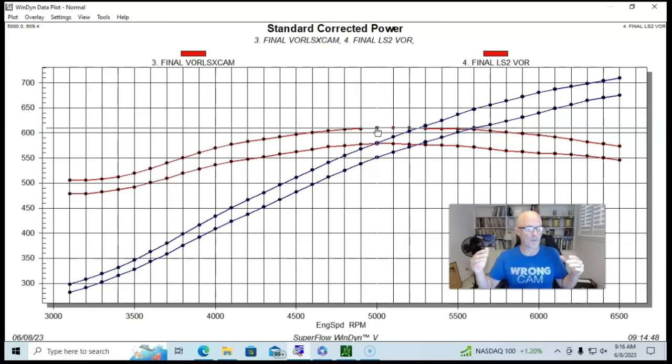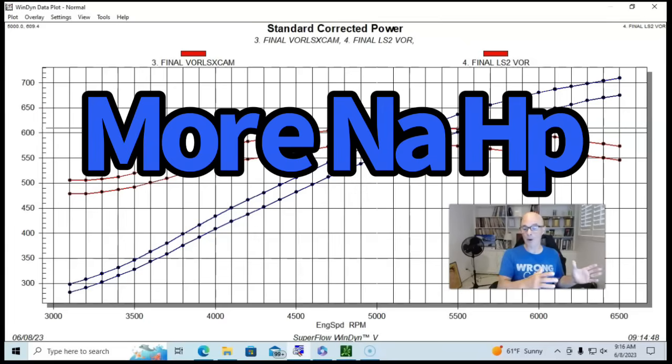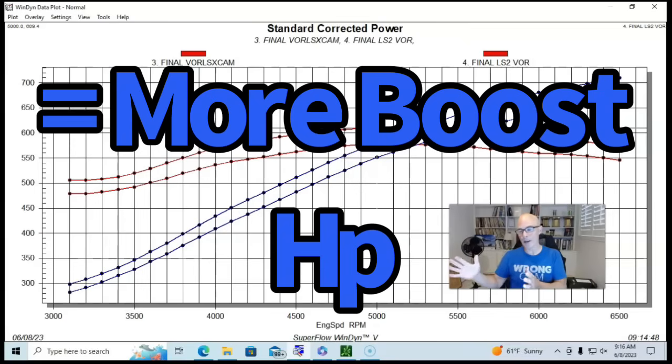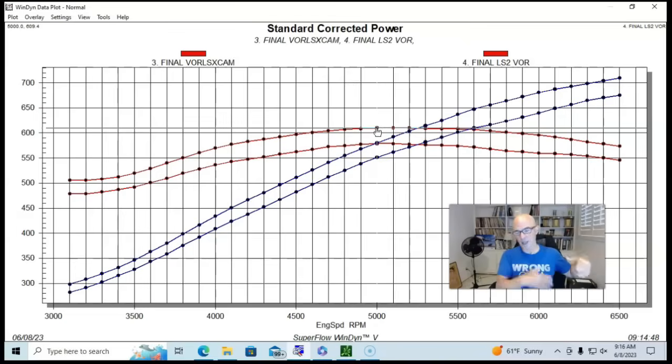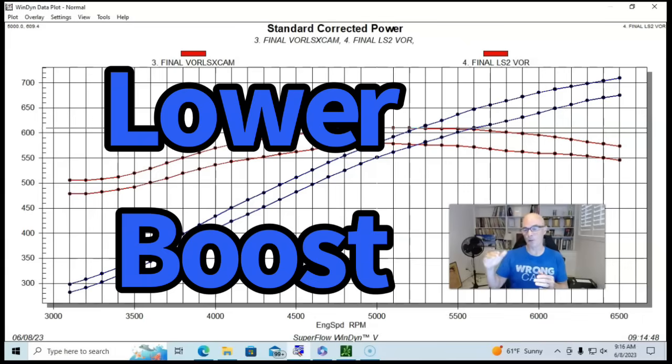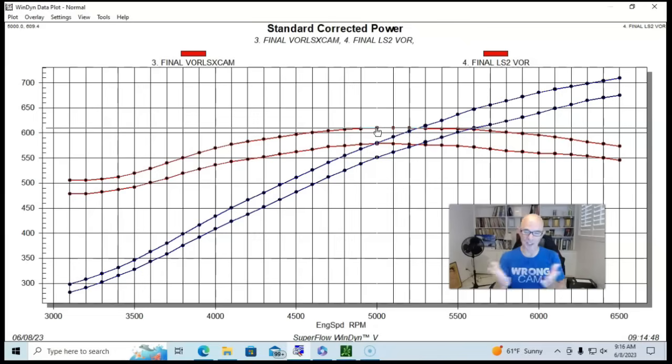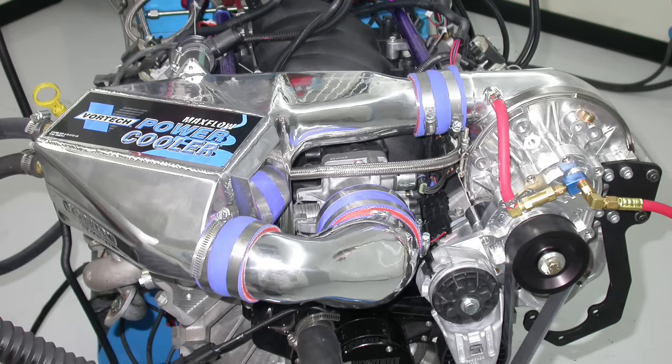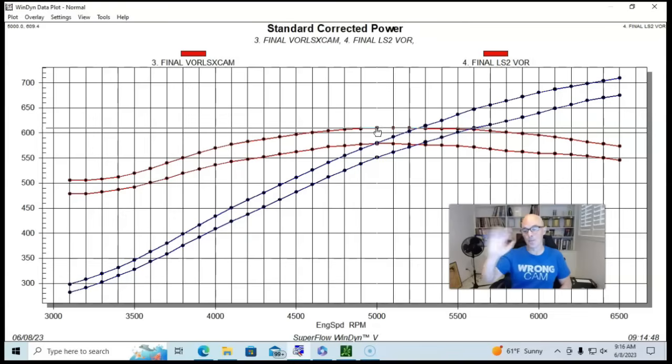We've said this many, many times on this channel. When you have more NA power, when you're starting out with more NA power and you're adding boost, whether it's a Vortex Supercharger like this or a Turbo or a Twin Screw or a Roots Blower, when you start out with more NA power, you end up with more boosted power. And usually you'll do that either at the same boost level or in this case, since we're running a centrifugal blower, we had a drop in boost pressure. So bigger motor, more NA power, add the blower and you make more power at a lower boost.